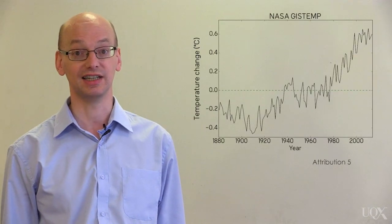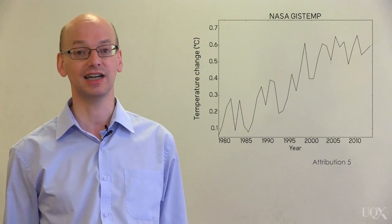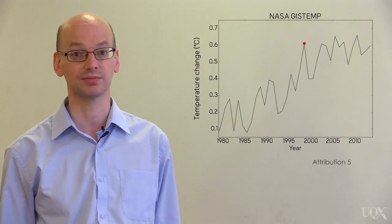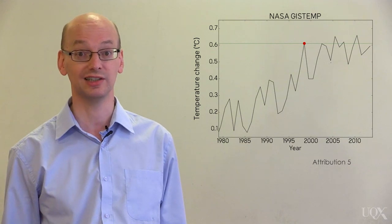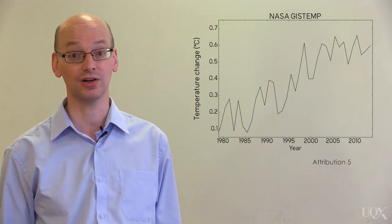One myth says that global warming stopped in 1998. This misunderstanding occurs because 1998 was a hot year compared to many in the last two decades. But we can see other examples of exceptionally hot or cold years in the record. Both 2005 and 2010 are hotter.